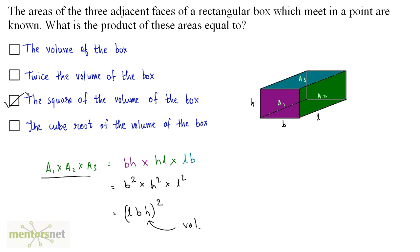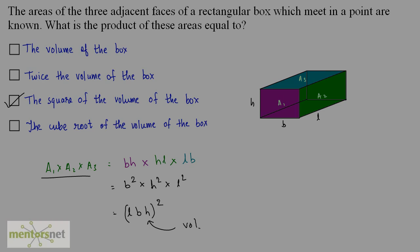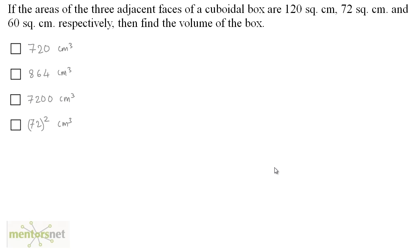So option C is the correct answer. If the areas of the three adjacent faces of a cuboidal box are 120 square centimeter, 72 square centimeter and 60 square centimeter respectively, then find the volume of the box.